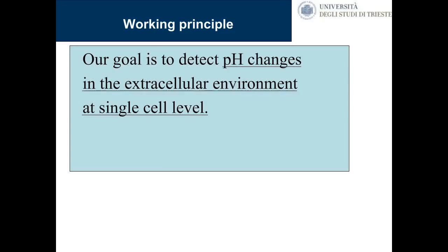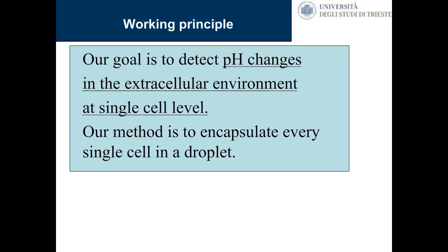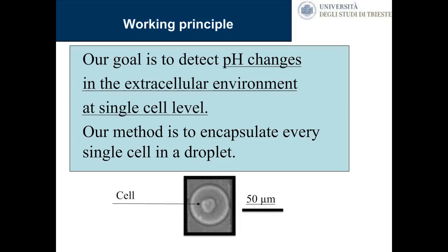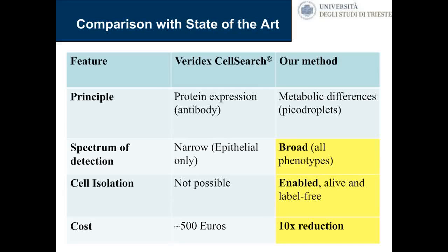The working principle is to detect pH changes in the extracellular environment at the single-cell level. We do that by encapsulating each single cell in a droplet using a microfluidic device. In a 50-micron cell containing a few picoliters, you have one cell per droplet and can make it flow. The principle is to detect metabolic differences in picodroplets. The spectrum of detection is broader than epithelial-only approaches — all neoplastic phenotypes produce the same Warburg effect. If the cell is neoplastic, it will acidify, giving a broad response spectrum.